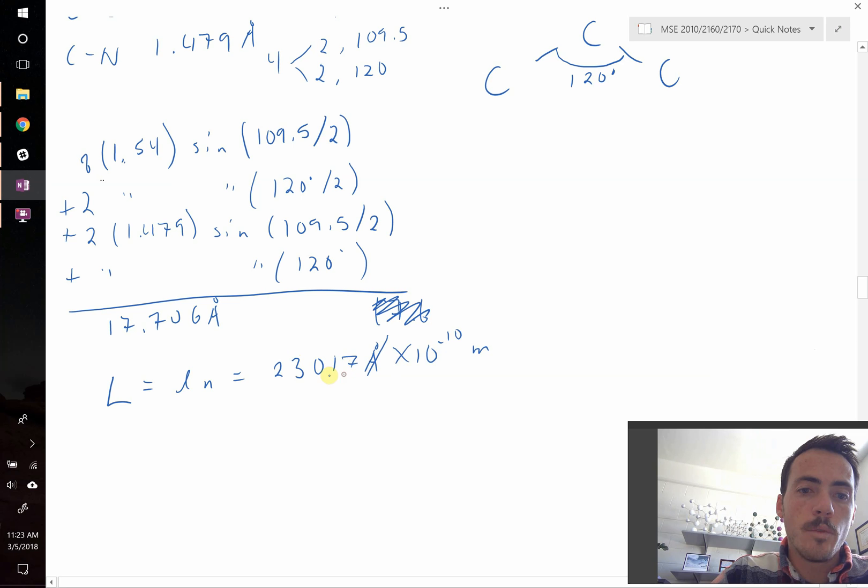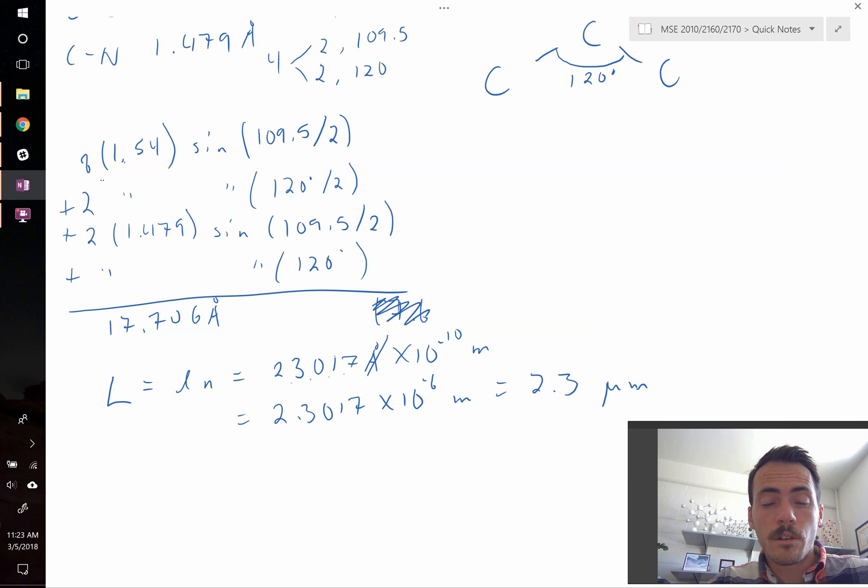Then you can move this over 1, 2, 3, 4 spots in the decimal. So this is really equal to 2.3017 times 10 to the negative 6 meters, which is just the same as 2.3 micrometers, right? 2.3017 technically, right? So this thing is not very long. Even though it's a pretty long polymer, 1,300 for its degree polymerization, still, you couldn't see it with your naked eye, right? That's still really not that long of a polymer, it's only a couple microns long.